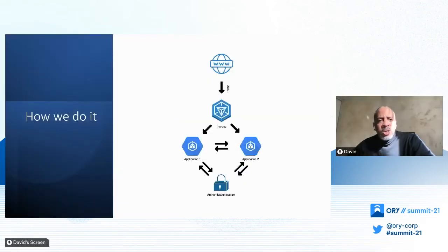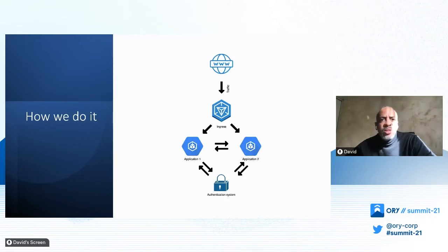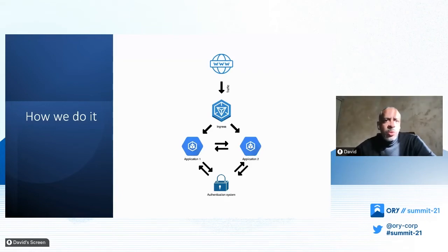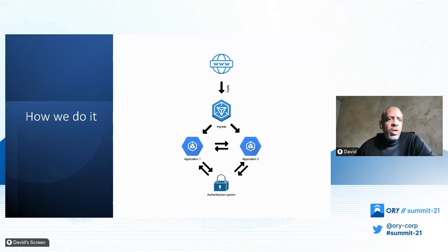Our applications are running in several Kubernetes clusters. Here is an example of how it worked before. External traffic goes through a reverse proxy called Ingress to reach the right application. Each application checks the JWT token with the authorization system. Even between application calls, a check is done against the authorization system. In addition, each application has its own permission checking.